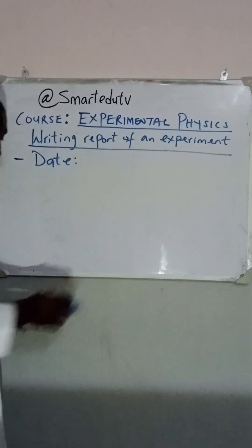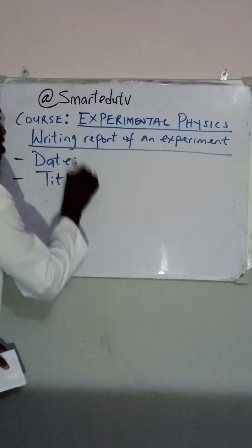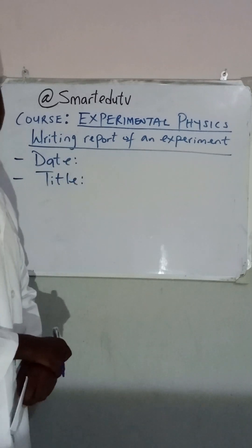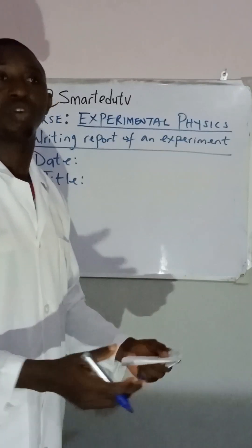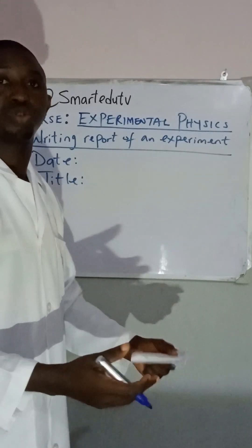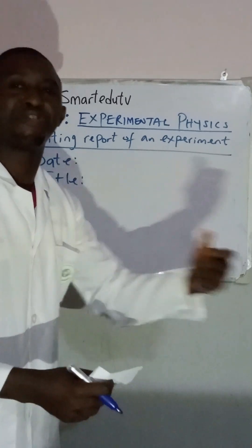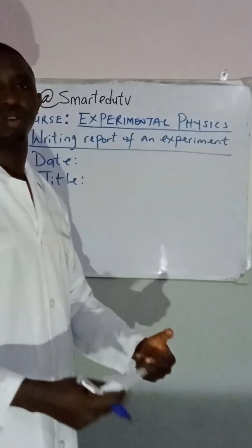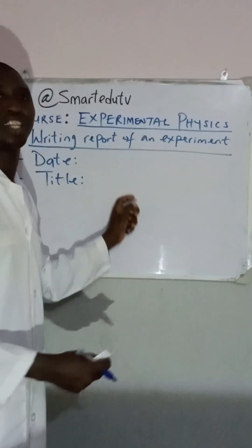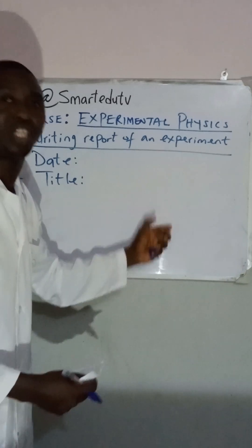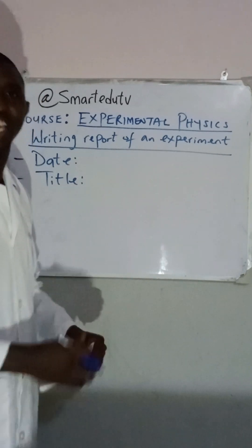The next thing after writing the date is to include the title — the title of the experiment. For instance, in an experiment that involves refraction through a glass block, the title of the experiment will be 'Refraction Through Glass Block.' We have different experiments in physics, and it is very important to always indicate the title of the experiment. This must be included in the report.